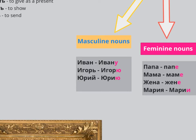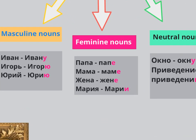Let's move on to the feminine nouns. Words like ПАПА, because it still ends in А, changes to ПАПЕ. So who are you giving it to? The answer can be ПАПЕ — I'm giving it to my dad. МАМЕ — А gets replaced by Е. ЖЕНА becomes ЖЕНЕ. МАРИЯ ending in Я becomes МАРИИ. So А changes into Е, and Я changes into И. ПАПЕ sounds like 'pape', МАМЕ, ЖЕНЕ — stress on Е.